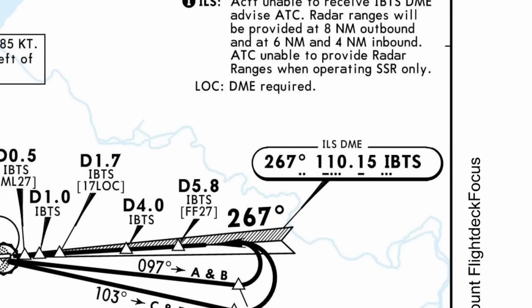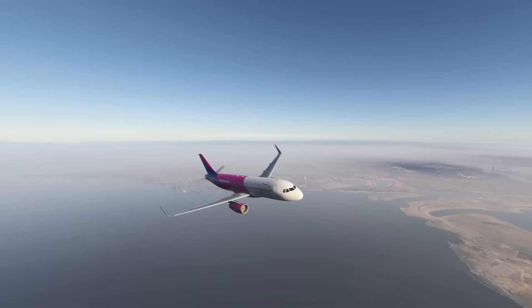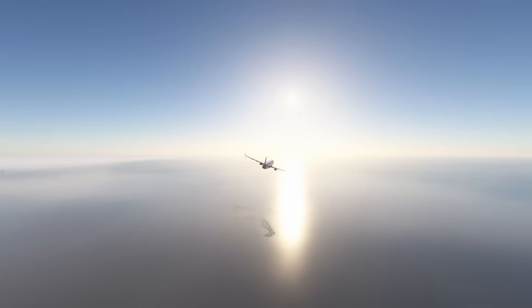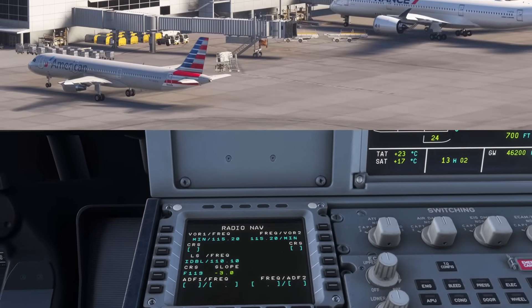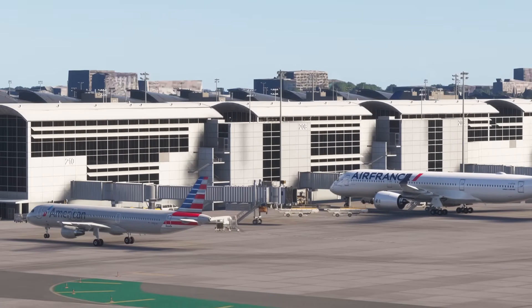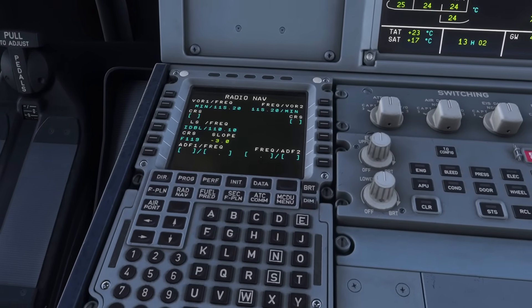For example, on this chart the frequency is 110.15 — that's what you'll tune your aircraft to. The identifier here is India Bravo Tango Sierra; check that to confirm you're on the correct ILS. The Morse code next to it is a legacy feature and isn't necessary today. And finally, the course: 267 degrees — that lines your aircraft up perfectly with the runway. In most modern aircraft, especially Airbuses, this all tunes automatically when you select an ILS approach in the MCDU. But in the sim, always double check — sometimes you'll need to set it manually, which we'll learn to do later.